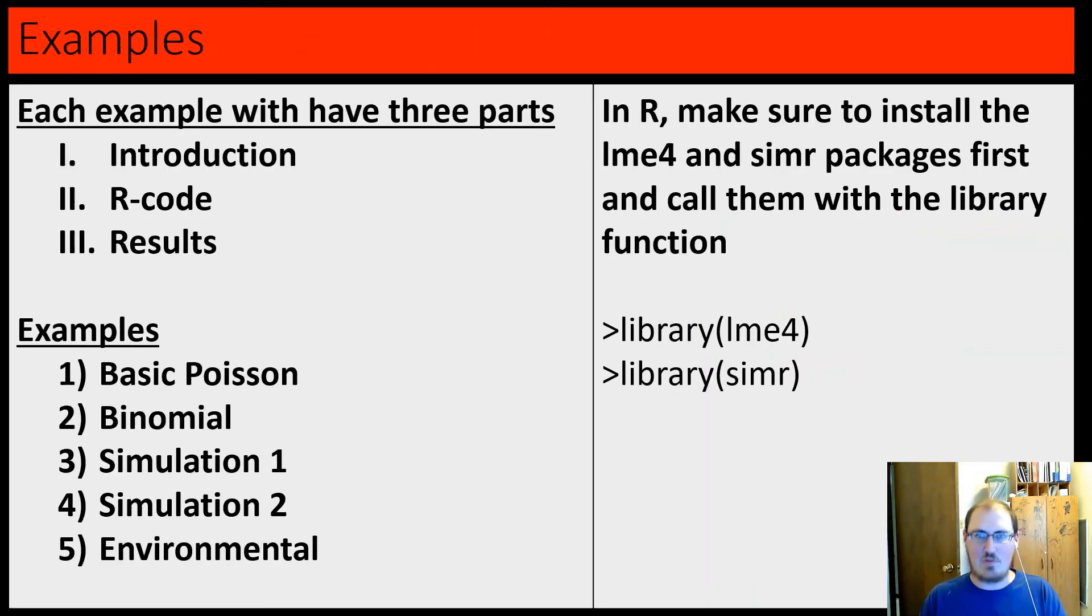One, get data. On to the examples. So, this is the format. I'll have an introduction page, an R code page, and a results page. We'll cover five examples. From basic Poisson to environmental study. I strongly suggest, while we're going to do this, copying and pasting the code that I have here into R and following along. Make sure you have LME4 and simr installed and then called with the library function. Like so.